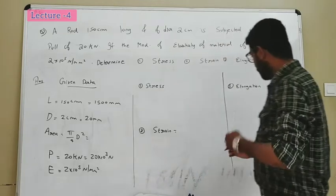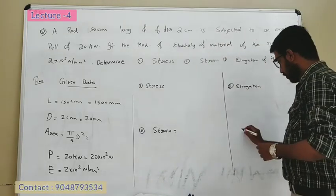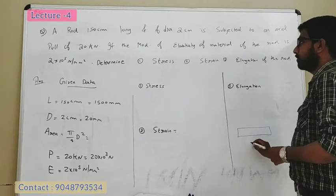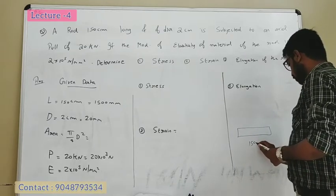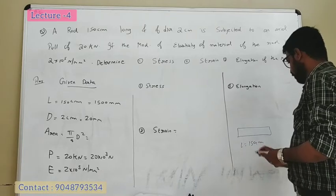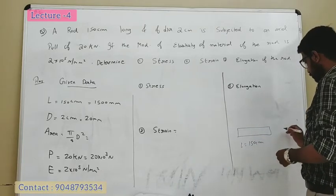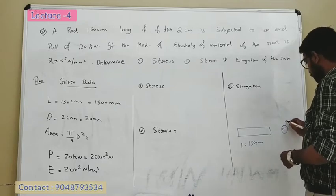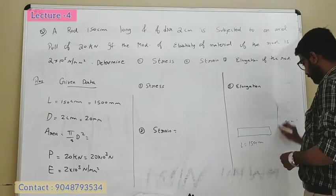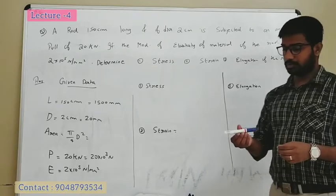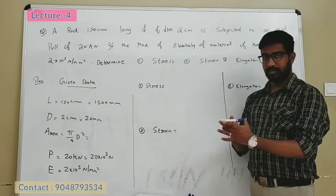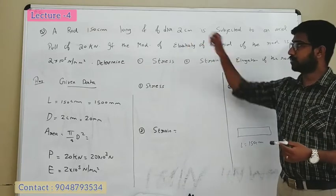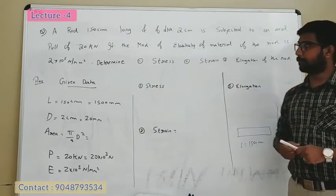Let's look at the question. What is a rod? The length is 150 cm, L is equal to 150 cm. This is a longitudinal view. This is a cross-sectional view, and the diameter is equal to 2 cm. The cross-section here is a circle of diameter 2 cm.